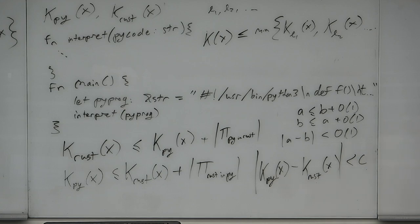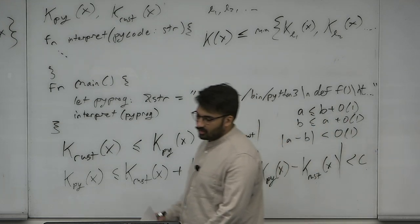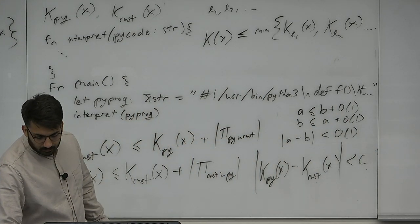Do we believe the invariance theorem? Languages don't really speed anything up algorithmically — the Church-Turing thesis is a big hammer here. When you choose a language, you do so based on available libraries or frameworks, not esoteric computational properties. Security is a feature of Rust, things like that — but computationally they're equivalent.